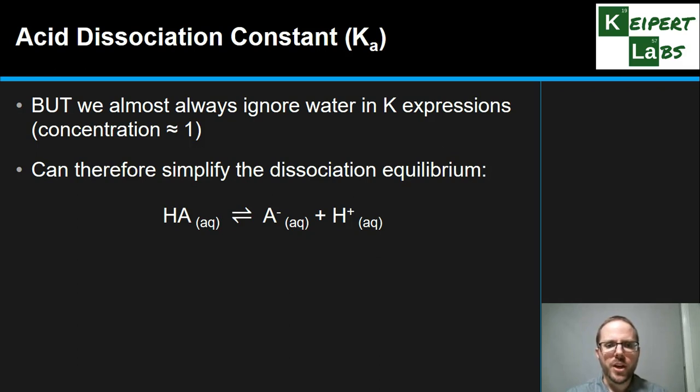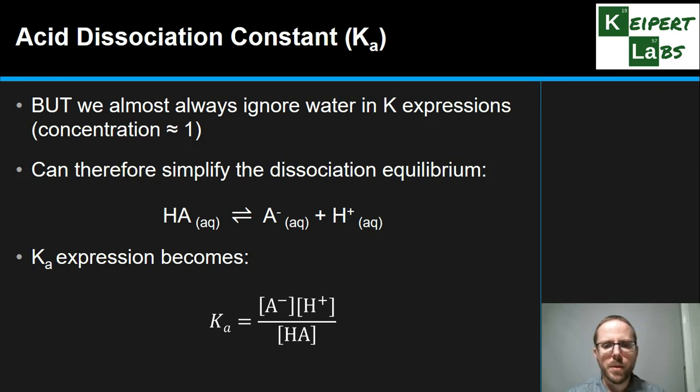So we're just going from HA to A⁻ and H⁺. Now we know that H⁺ is not the thing that really exists in solution. It's H₃O⁺, but we've simplified our expression so we can simplify this too. Therefore our Ka expression becomes this. So we've got A⁻ and H⁺ over HA. So this is the generalized form of the Ka expression, where HA is some example of weak acid. I'm going to show you how that looks for a particular example now.